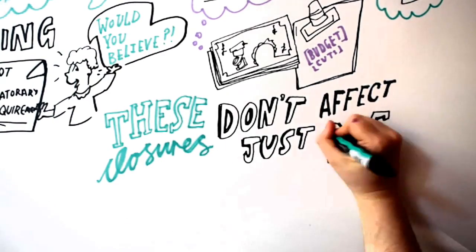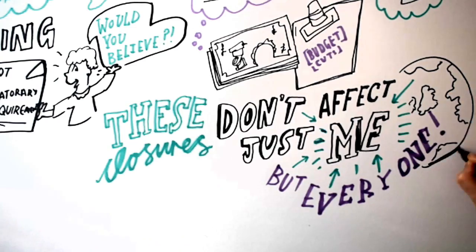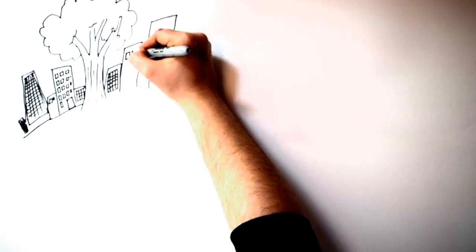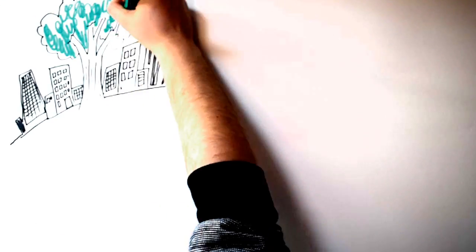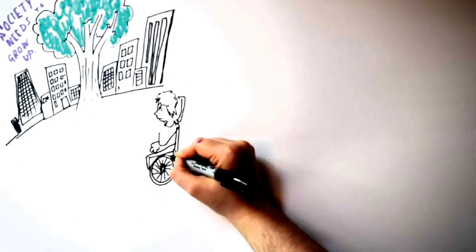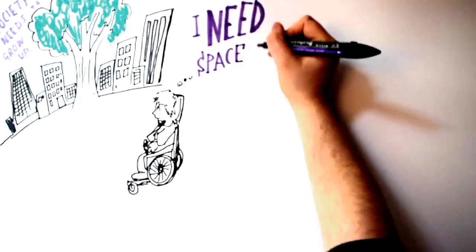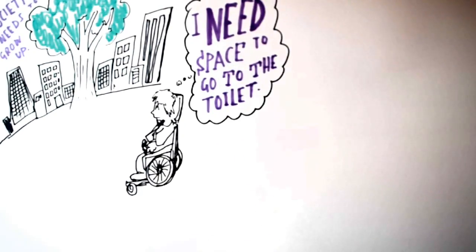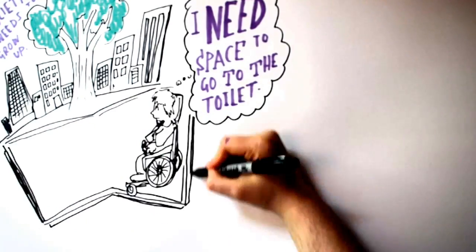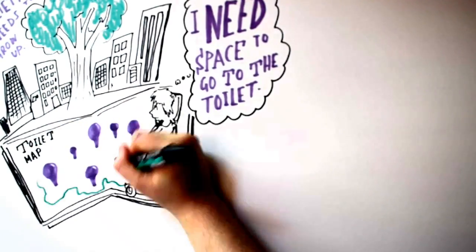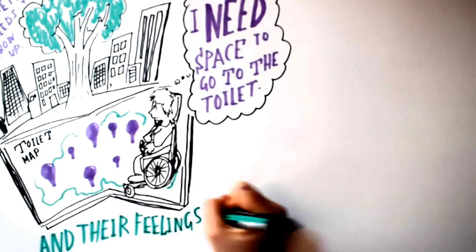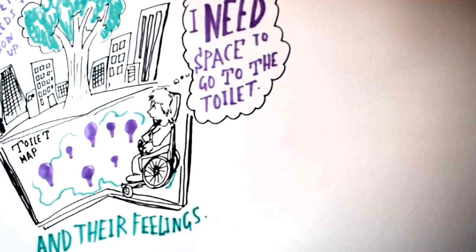MPs pay lip service to the problem and some giggle hysterically when the subject is raised. These closures don't just affect me, they affect us all. Society hasn't grown up that much. Disabled people need space to go to toilet and they should have more areas for disabled people and their feelings.